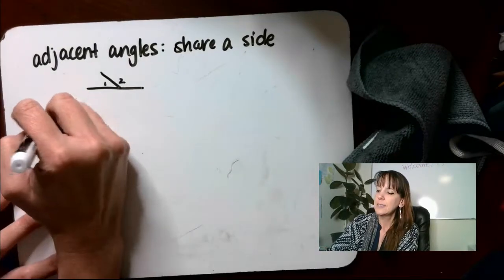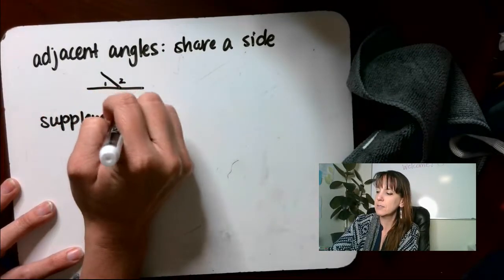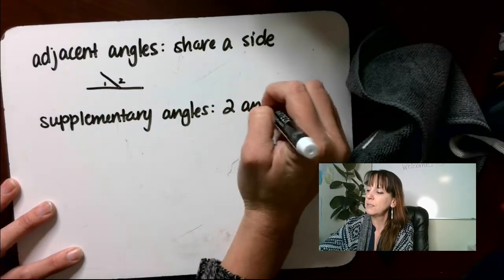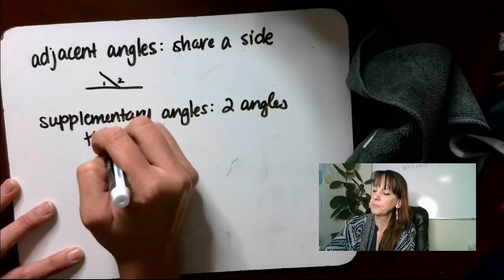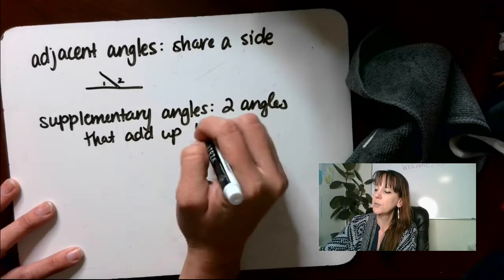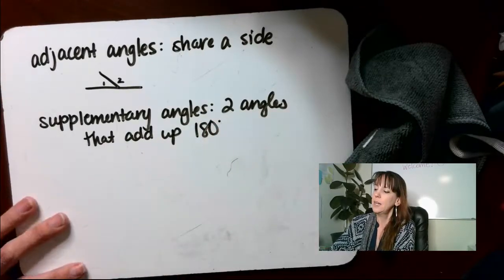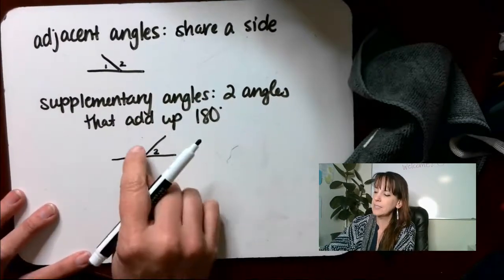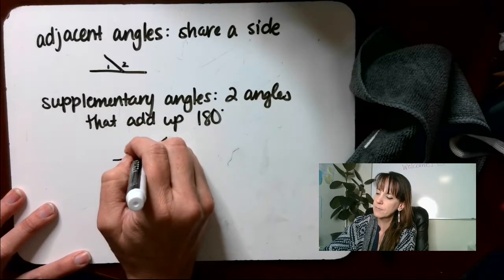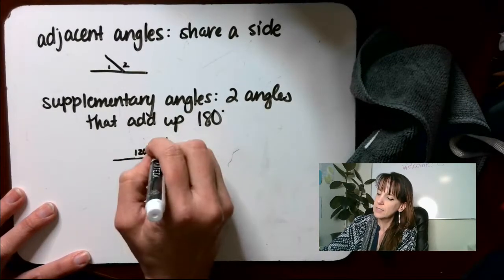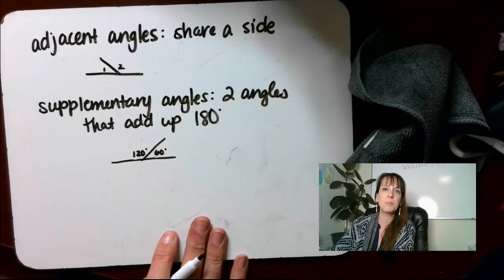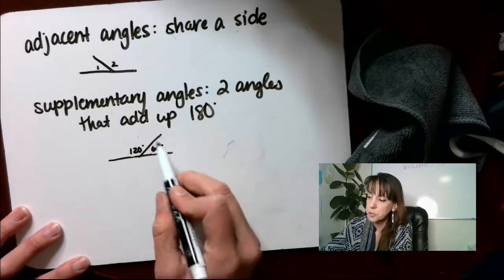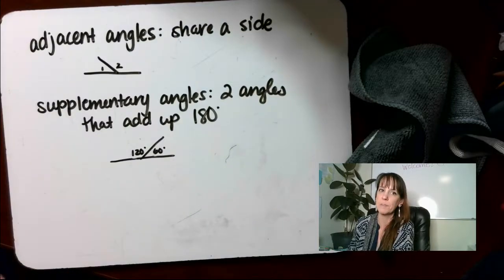Another term is supplementary angles — two angles that add up to 180 degrees, or form a line. So something like this: angle one and angle two — let's say this is 120 degrees and this is 60 degrees. Those are gonna add up to 180, so these would be supplementary. Angle one and angle two would be supplementary — they add up to 180.